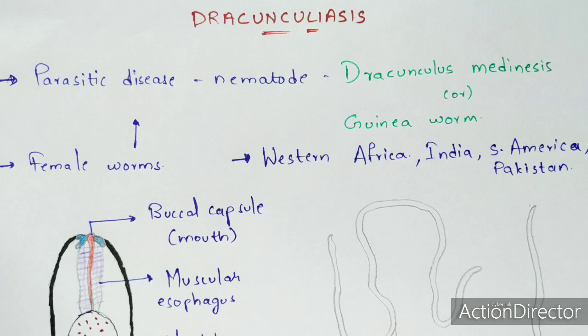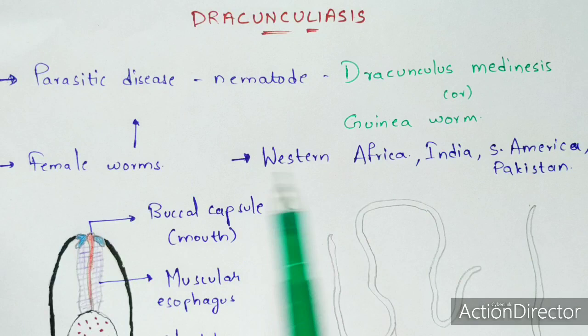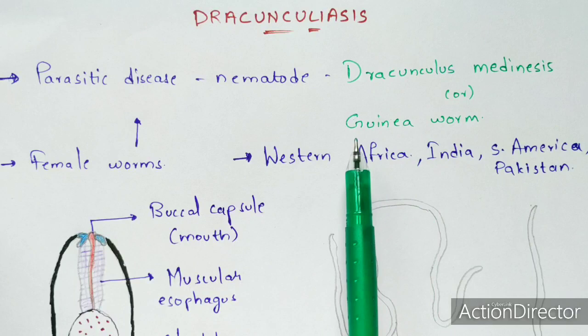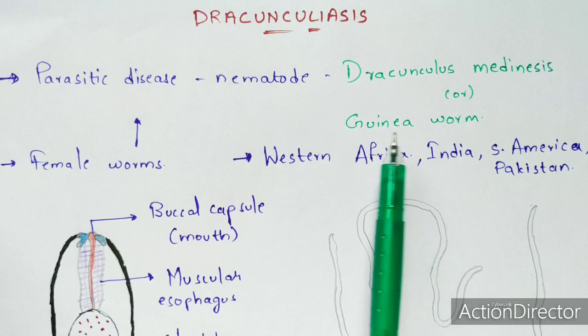In this video, let us discuss about Dracunculiasis. Dracunculiasis is a parasitic disease which is mainly caused by a parasitic nematode called Dracunculus medinensis — that is the scientific name of the nematode. The common name is Guinea worm, so in this video I'm going to call it the Guinea worm.